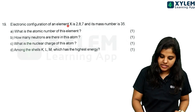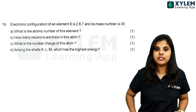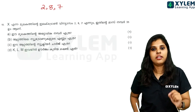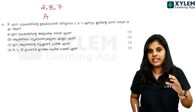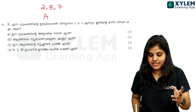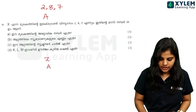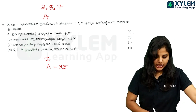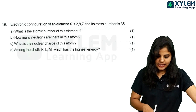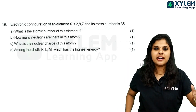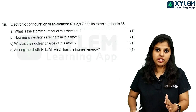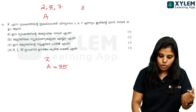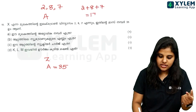Electronic configuration of an element X is 2, 8, 7. Its mass number is 35. If an element has electrons, the electron value is 2, 8, 7. What is the atomic number? The atomic number is Z. 2 plus 8 is 10, plus 7 equals 17.